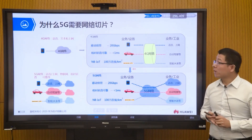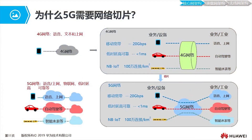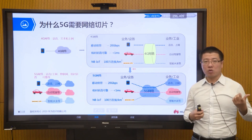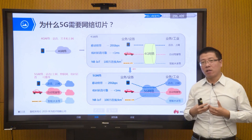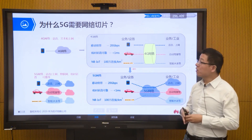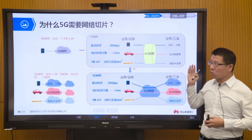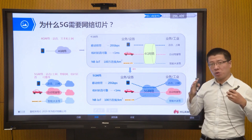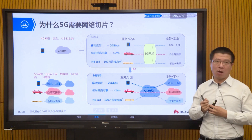A student asked yesterday: why does 5G need network slicing? Because we want to enable vertical industries through 5G. This network is not only going to change our lives — more importantly, it will digitize vertical industries and empower the digital economy. Only through slicing technology can we realize a single physical network that serves the goals of thousands of vertical industries.